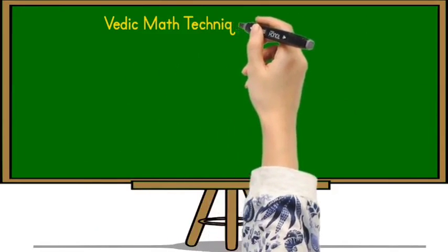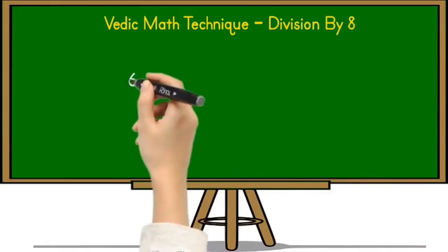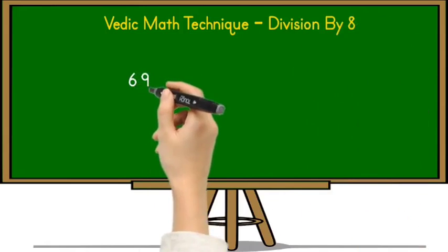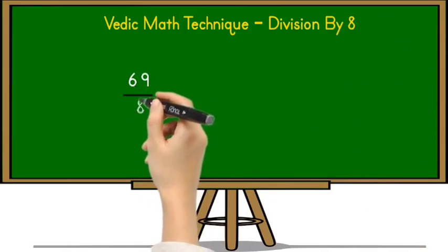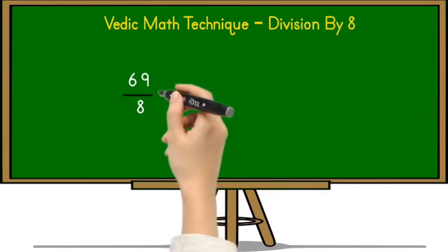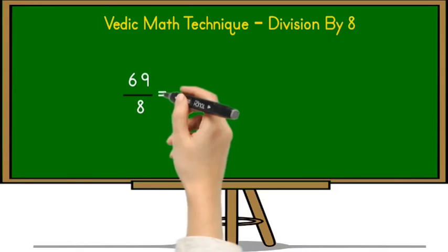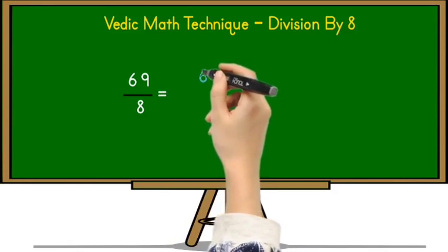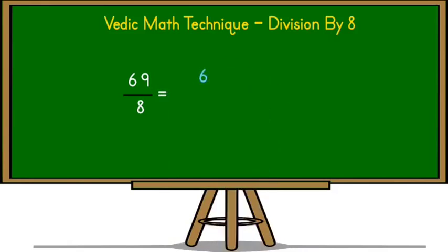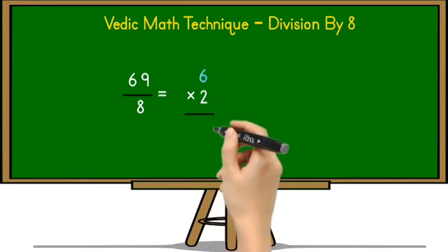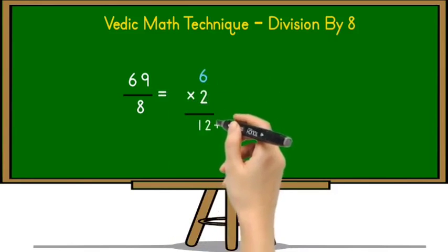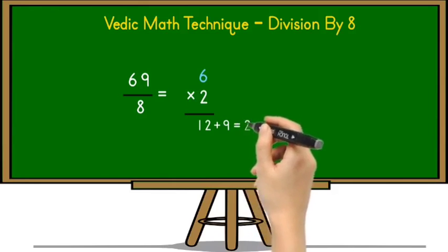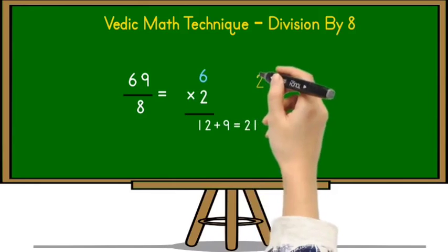To understand this better, let's take one more example on this technique. The example is 69 divided by 8. To solve this example, we use the same strategy as the previous one. First, write down the tens place digit of 69, which is 6, and multiply it with 2. 6 multiplied by 2 equals 12, and add the unit place digit of 69 to it. So 12 plus 9 equals 21.